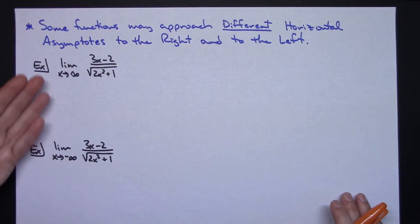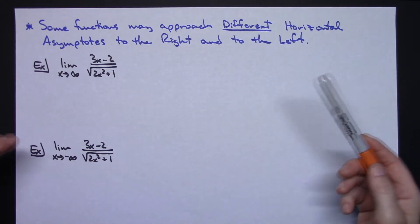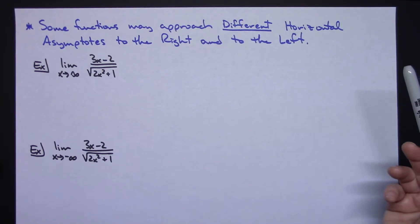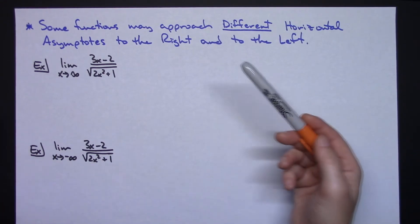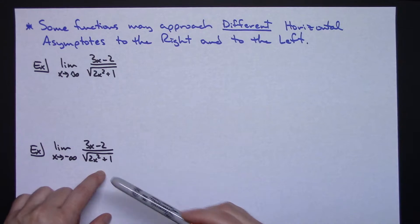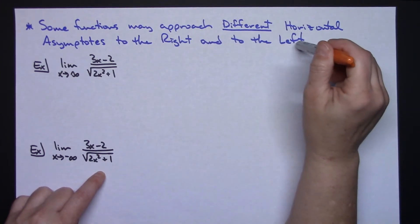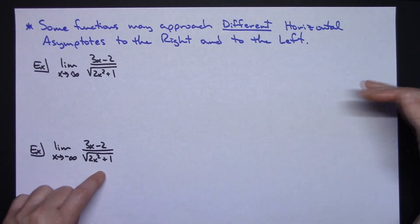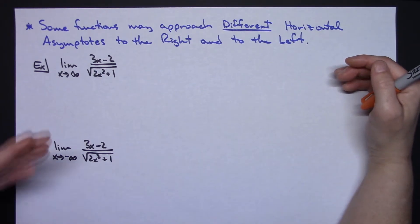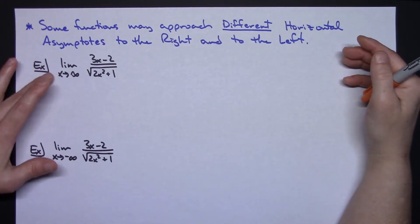For our second example, we're taking a different approach. It's worth noting that some functions may approach different horizontal asymptotes to the left and the right. When doing curve sketching and finding horizontal asymptotes, you have to take both the limit as x approaches infinity and the limit as x approaches negative infinity. You cannot just do one, because as this example will show, the two limits could give different values — one asymptote to the right and a different one to the left.